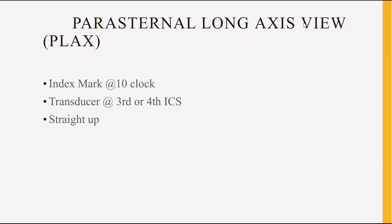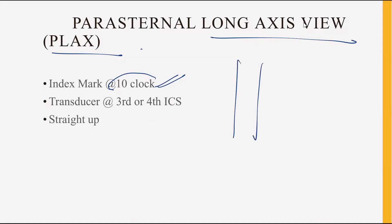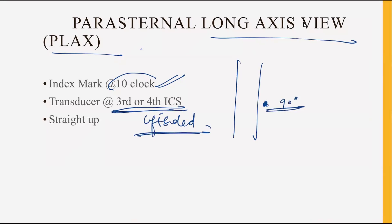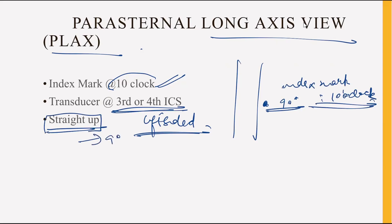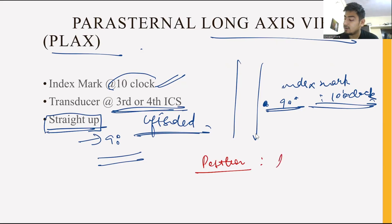The first view we make is the parasternal long axis view. In this, we put the index mark at the 10 o'clock position. The probe is placed at the third or fourth intercostal space, parasternal, on the left side, at 90 degrees. The patient position while doing 2D echocardiography is left lateral.